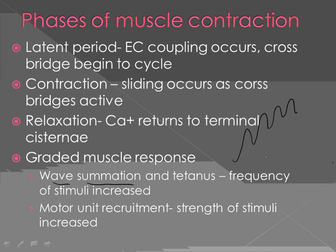Sometimes stimuli arrive so fast that the muscle is not allowed to relax at all, producing very little relaxation. If completely fused, the contractions at the top become absolutely fused — this is known as tetanus. An example is trying to lift a very heavy object with maximum effort — the contraction is fused and the muscle doesn't relax. This is fused tetanus, which is different from the bacterial infection tetanus.